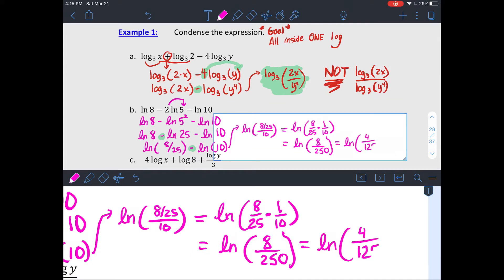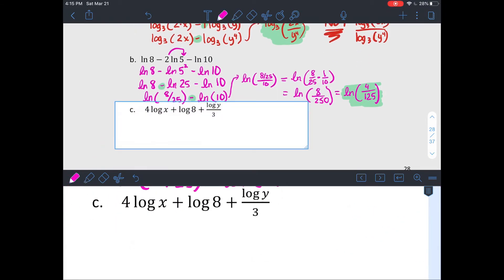You can also kind of combo these. Anything that's being subtracted should end up in the denominator when you condense it. So you could make it into 8 over and then in parentheses 25 times 10 both instead of two steps.